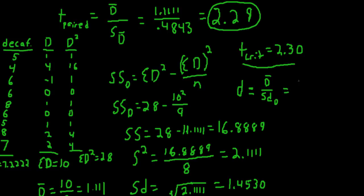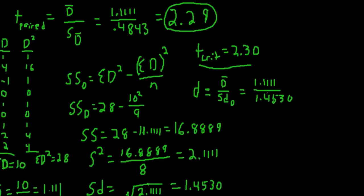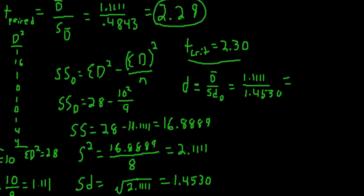And in this example, that is 1.111. The numerator remains the same. The denominator becomes the standard deviation, which we calculated as 1.4530. So our effect size measure for this example is 0.7647.